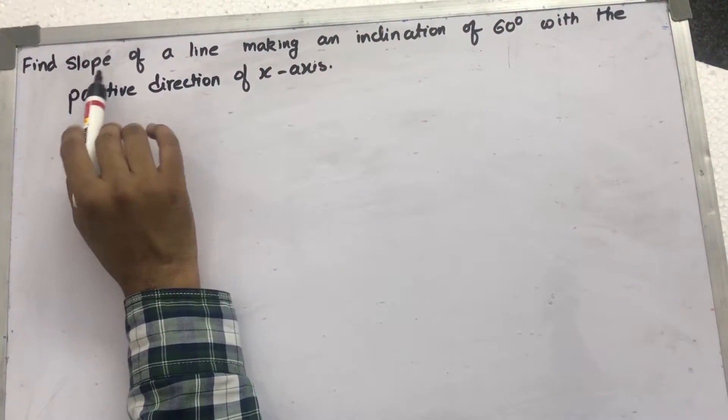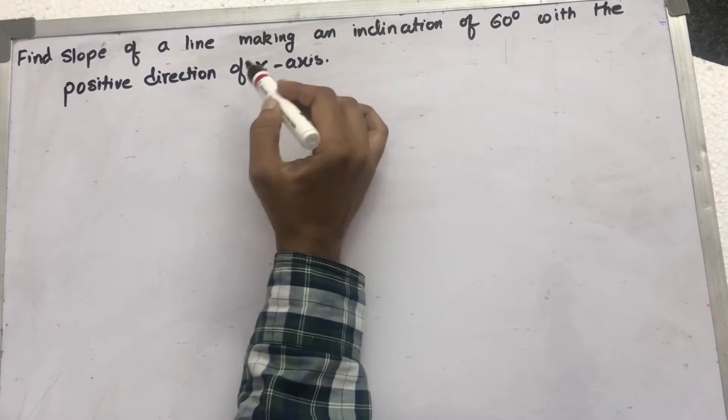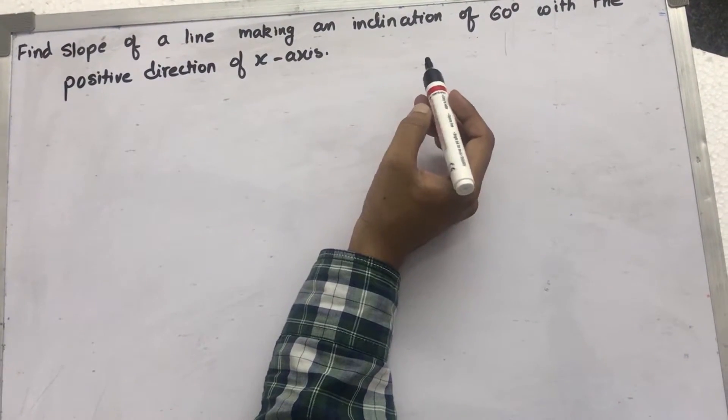Now, here we need to find the slope of a line making an inclination of 60 degrees with the positive direction of the x-axis.